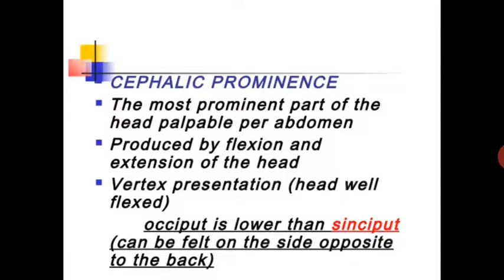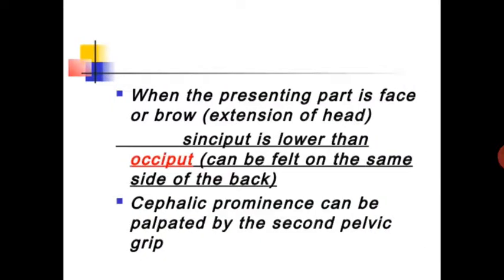Cephalic prominence is the most prominent part of the head palpable per abdomen, produced by flexion or extension of the head. In vertex presentation with the head well flexed, the occiput is lower than the sinciput, and cephalic prominence can be felt on the side opposite to the back. When the presenting part is face or brow (extension), the sinciput is lower than the occiput, and it can be felt on the same side as the back.